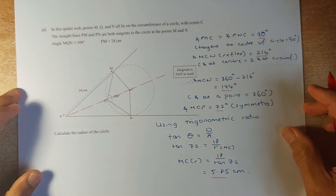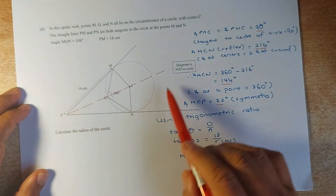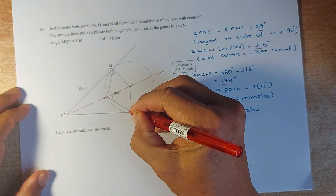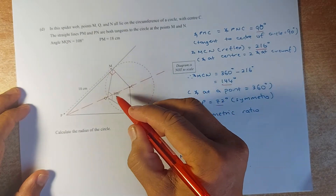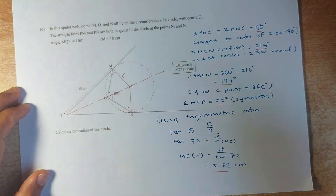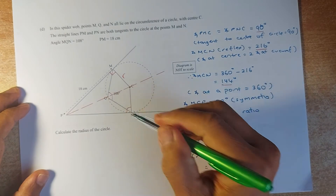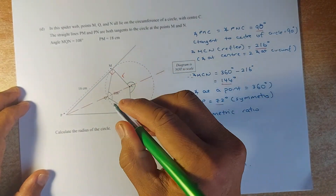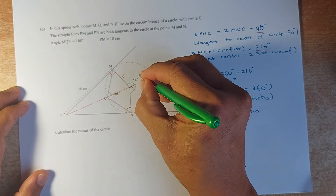Now we do the second merit question. Points M, Q, and N all lie on the circumference of the circle with center C. The straight lines PM and PN are both tangents, so each makes a 90-degree angle with the radius. Angle MQN is 108 degrees and the length is 18. To find the radius: the angle at the center is twice the angle at the circumference, so the reflex angle MCN is 2 times 108, which equals 216 degrees.